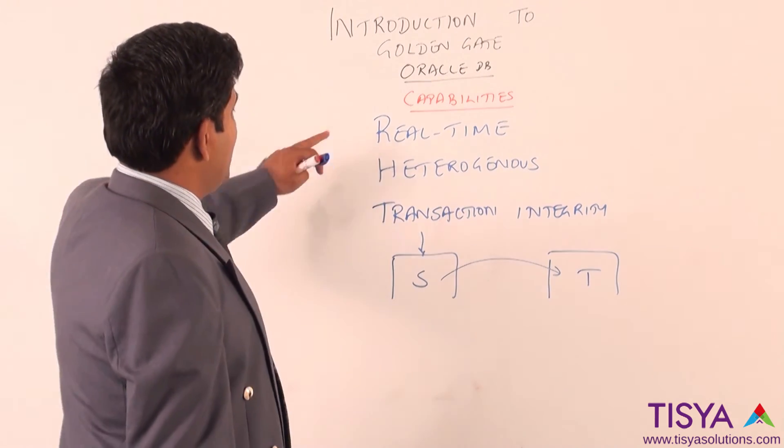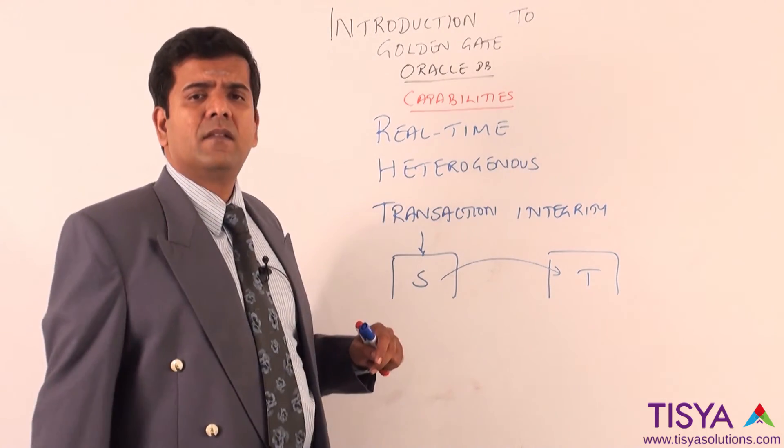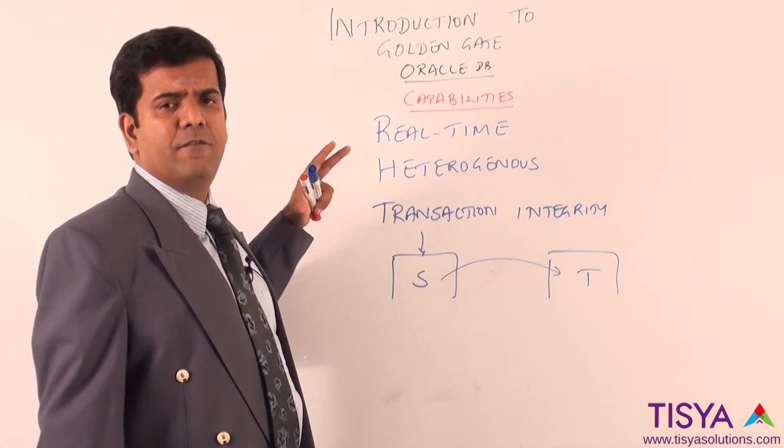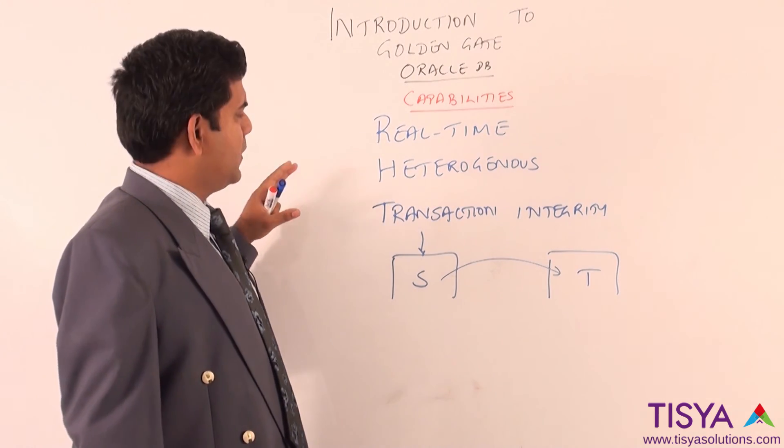So these are the three major capabilities which make Golden Gate a very crucial factor in terms of data integration.